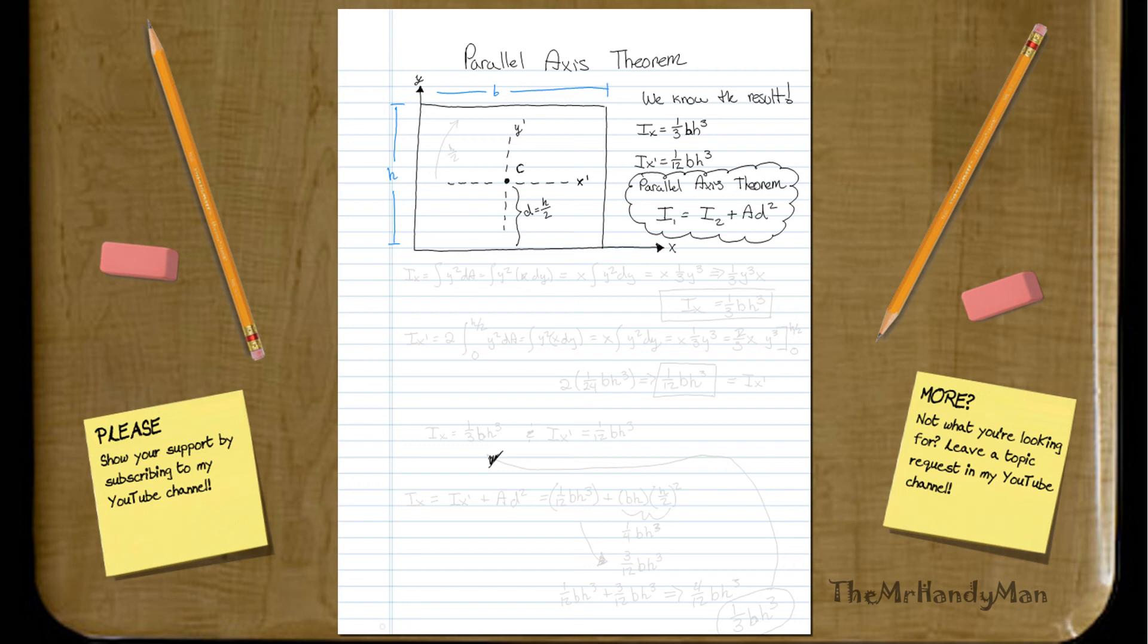Okay, so, first of all, let's determine what ix is, inertia about x. That would be y squared dA equals integral of y squared x dy, which equals x the integral of y squared dy.